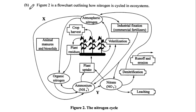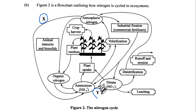Let's look at Question 1B. Figure 2 is a flow chart outlining how nitrogen is cycled in ecosystems. We can see a complex diagram showing how atmospheric nitrogen is converted to ammonia, then to nitrates, and finally can either leach into the soil, be taken up into plants, or be returned to the atmosphere as nitrogen gas. The question asks us to label parts X and Y. X shows nitrogen gas converting into ammonia, which is done in the roots of plants and in the soil through nitrogen-fixing bacteria — this is called nitrogen fixation.